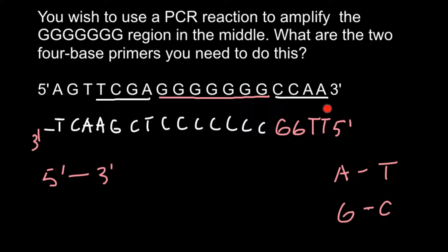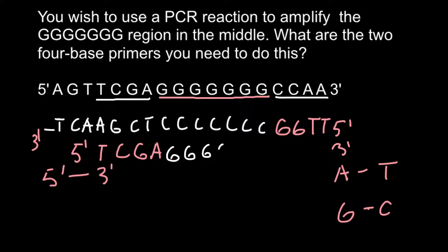So as you see, in the first PCR reaction we only need one primer and we make a complementary strand of the DNA. For the second cycle of this PCR reaction we would need another primer, and this is going to be: thymine, cytosine, cytosine, guanine, adenine. Here we would have the 5' end and here the 3' end. A new DNA strand grows from 5' to 3', so we are going to get guanine, guanine, guanine, guanine, guanine, guanine, guanine, guanine, guanine.